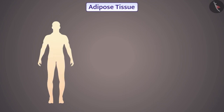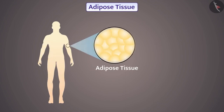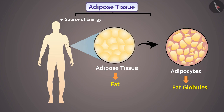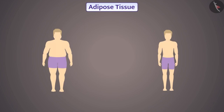Similarly, adipose tissue is present below the skin and between internal organs. Its cells, called adipocytes, are embedded in a jelly-like matrix. Adipose tissue stores fat, so its cells are filled with fat globules. Due to storage of fat, adipose tissue is a source of energy and also acts as a heat insulator. That's why a slim person feels more cold compared to a fatty person.